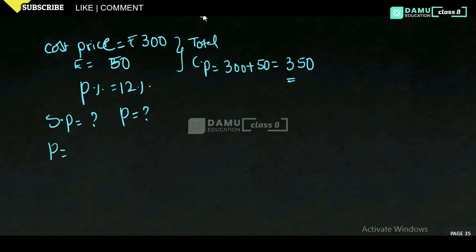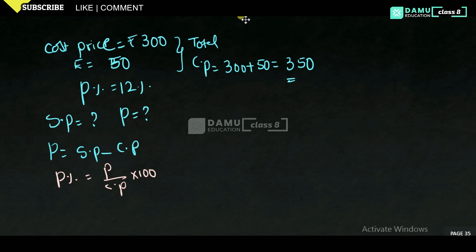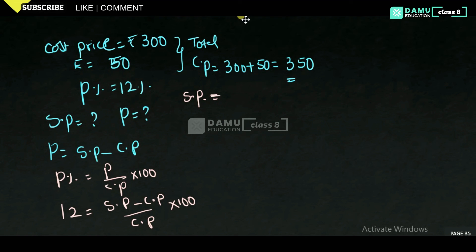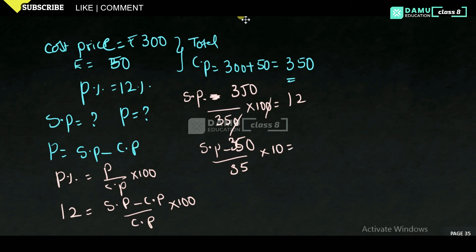The formula is profit equals selling price minus cost price. We don't know profit but we know profit percentage. Profit percentage equals profit by cost price into 100, so 12 equals SP minus CP divided by CP into 100. That is SP minus 350 divided by 350 into 100 equals 12. We cancel the 100 and 10, giving SP minus 35 into 10 equals 12 into 35.